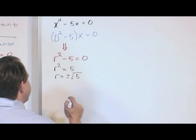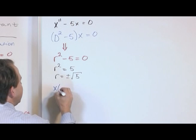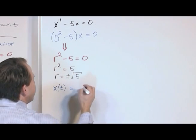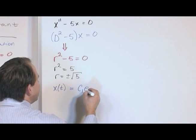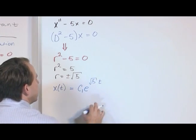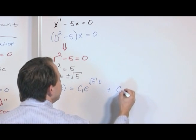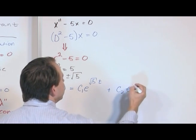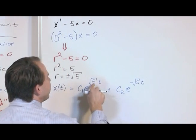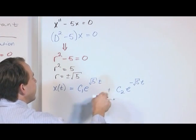x(t), which is the original function we were trying to find, is going to equal c₁e^(√5t) + c₂, which is just some other constant, e^(-√5t). Now the square root operates on the 5, the t is out to the side.